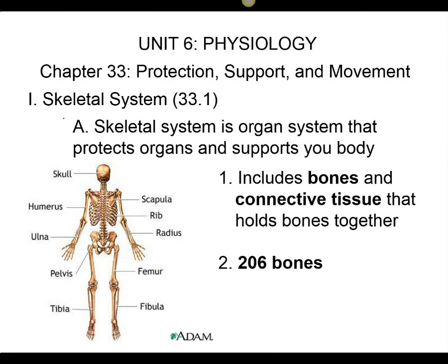We're going to start off with the skeletal system. We have 206 bones, but when we're born, we have over 300 because they fuse to make our 206 bones.